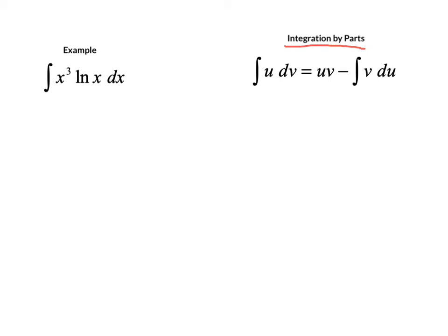It states that the integral of two factors, we call one u and the other one dv, is always equal to u times v minus the integral of v times du.